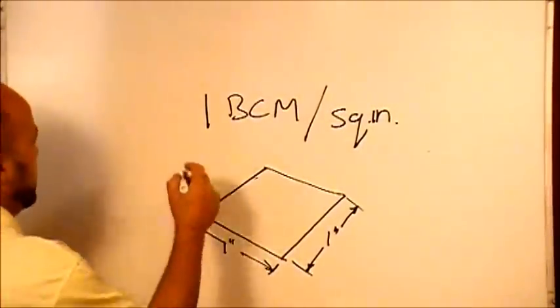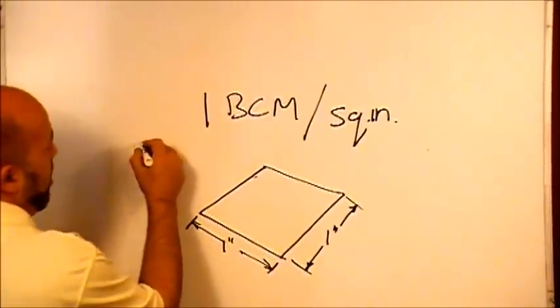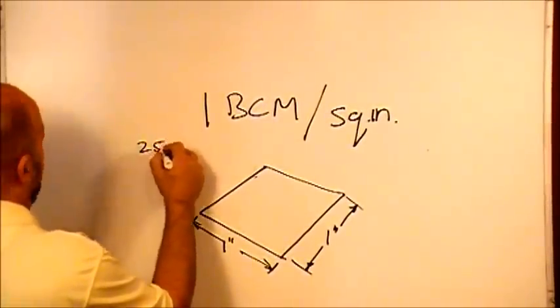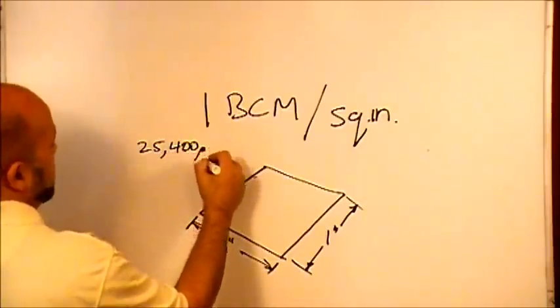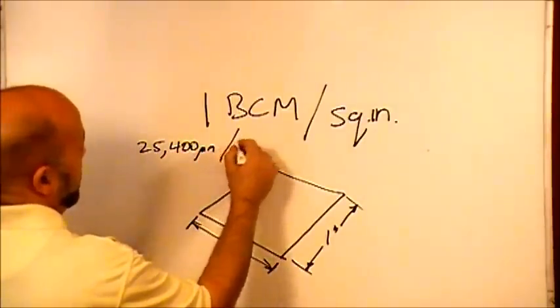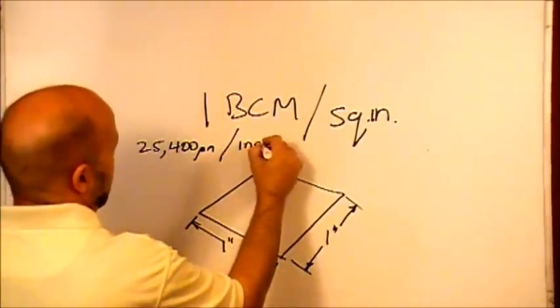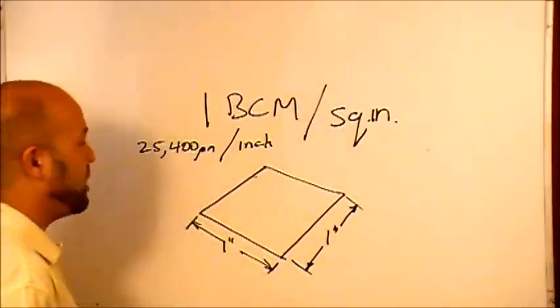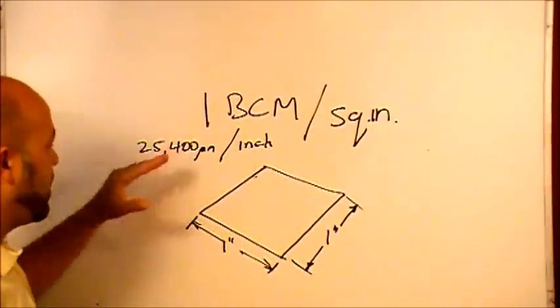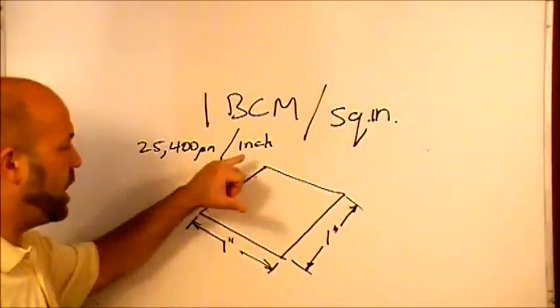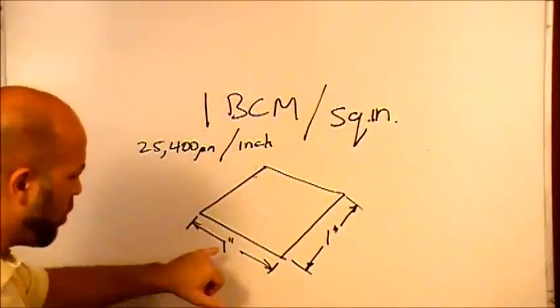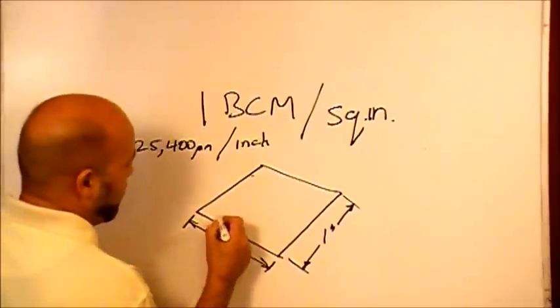So now we've got that square inch. We're going to see how thick is a BCM on this. Well, it just so happens that there are 25,400 microns per inch. That's just a mathematical conversion you can look up. There are 25,400 microns or micrometers in an inch.